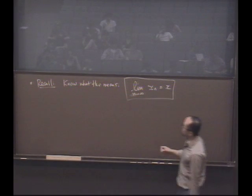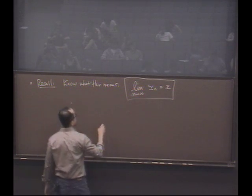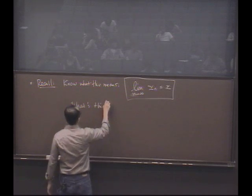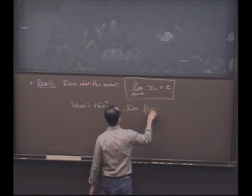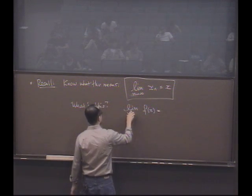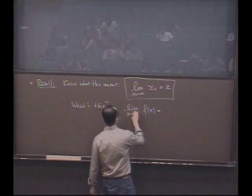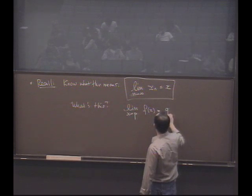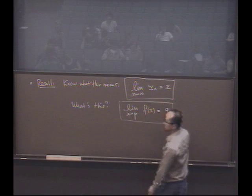But what I want to grapple with is the following question: does it make any sense whatsoever to talk about the limit of a function as x goes to—not some integer, not infinity—but as x approaches some, let's say, p? Does it make any sense to say limit of f(x) is q? What does this mean?